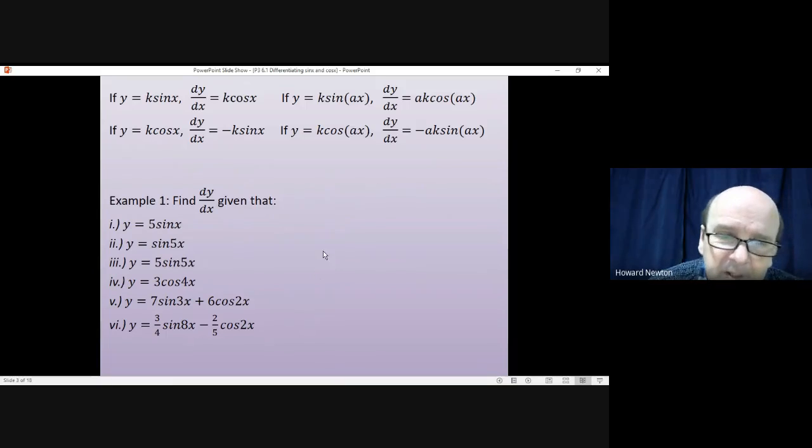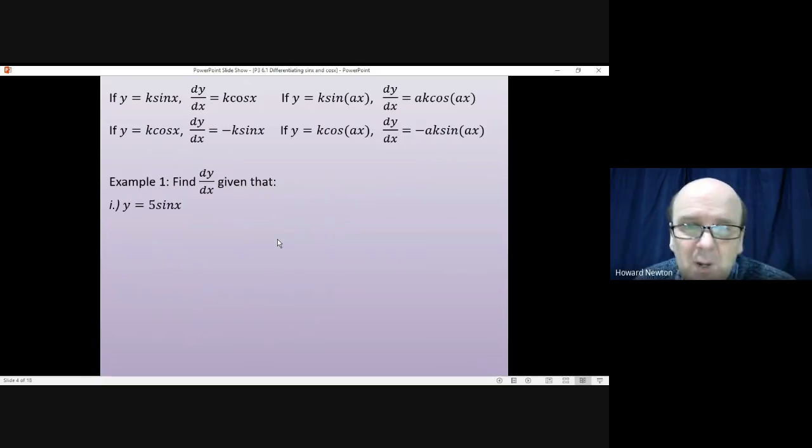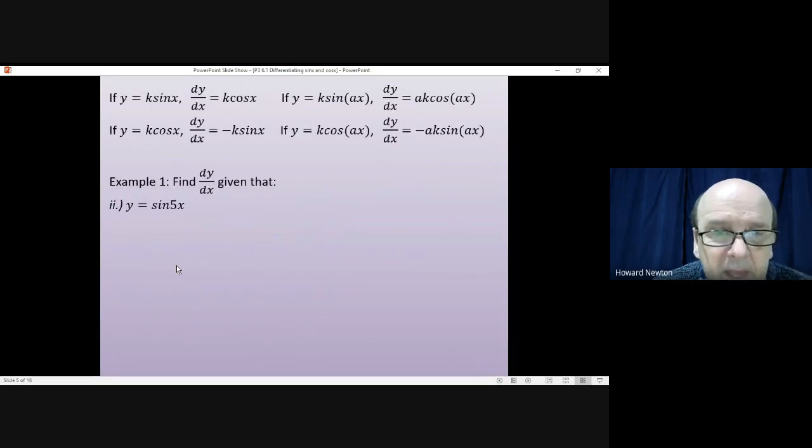OK, let's have a look at these. So first of all, y equals 5 sine x. You write down the 5. If you differentiate the sine x, and that gives you 5 cos x. Secondly, if you had the sine of 5x, you differentiate sine, and that gives you the cosine of 5x. And then when you differentiate 5x, you get 5. So you get 5 times by the cosine of 5x.